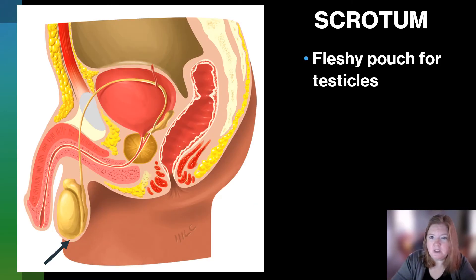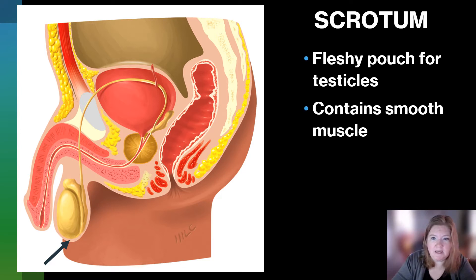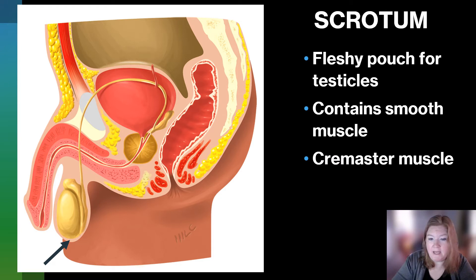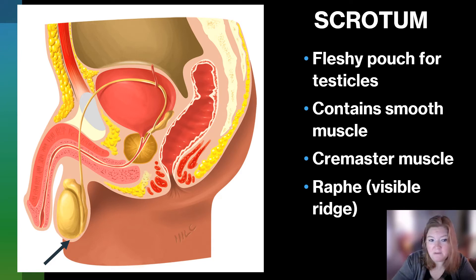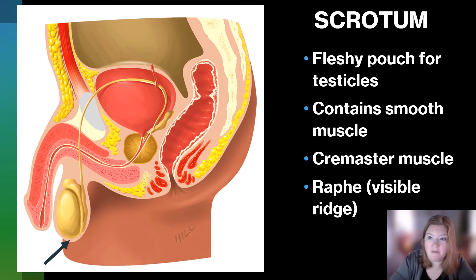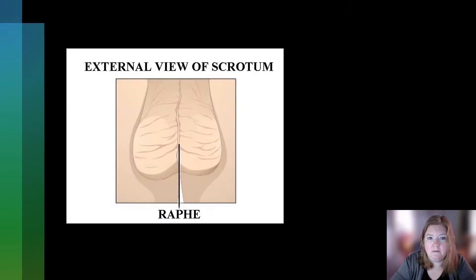What about the scrotum? The scrotum is a fleshy pouch for the testicles. It contains smooth muscle and has the cremester muscle, which is responsible for elevating the testicles. The raphe is the visible ridge that goes along the underside of the penis as well. Here is that ridge — that raphe — in the center of the scrotum.